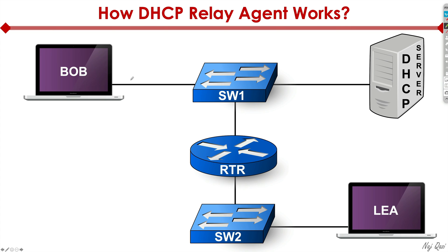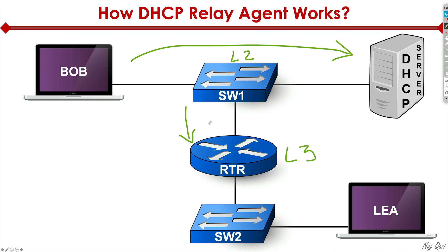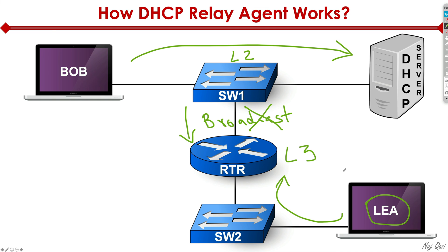By default, Bob gets an IP from the DHCP server no problem, because layer 2 switches can forward broadcasts all day long. But what if we have a layer 3 device — like a router — in the middle? Routers hate broadcasts; they drop them. So if Leah, on the other side of the router, wanted to get an IP address from the DHCP server, those packets would never make it through — they get dropped as soon as they hit the router interface.